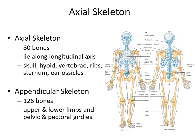There are 206 bones in the human skeleton. We can divide the skeleton up into two broad regions. We have the axial skeleton, which consists of bones found within the longitudinal axis of the body, and then we have the appendicular skeleton, which consists of the pectoral and pelvic girdles and the limbs.